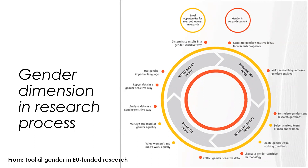It can help to think about the application of the gender dimension across the entire research process — from research idea to conceptualization, to actual analysis, to dissemination. I got this diagram from the Gender in EU-funded Research Toolkit, which breaks down the various stages of the research process and where you could consider different issues related to gender dimension, mentioning things like making research hypotheses gender-sensitive or reporting data in a gender-sensitive way. I will link the source in the description box.